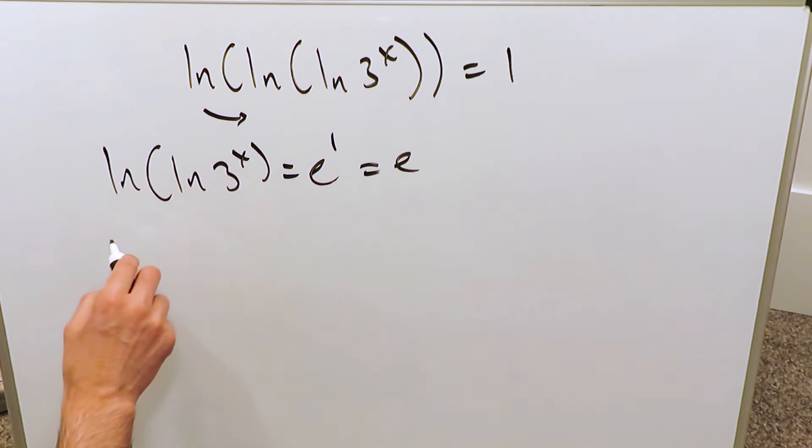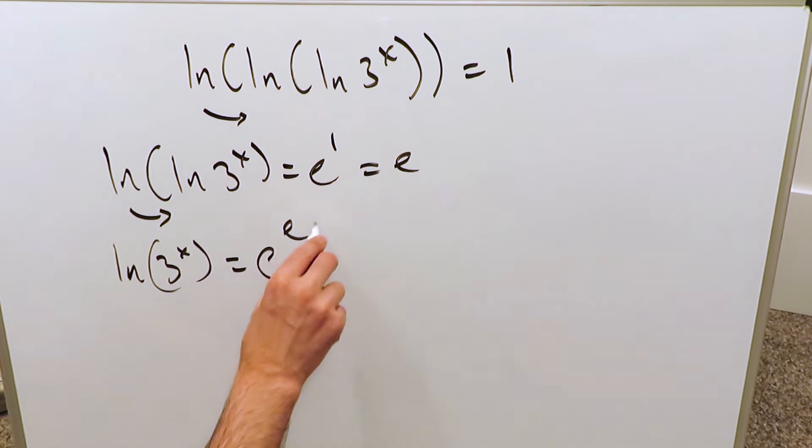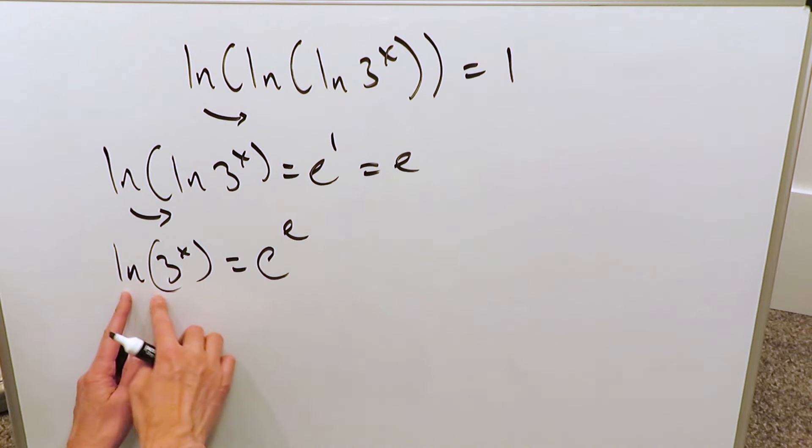Now what we're going to do is take the natural log, this other one on the other side. Natural log 3 exponent x is equal to e exponent e. Because it's an inverse function, when you take it on the other side, it brings out the inverse, the exponential. Not too bad.